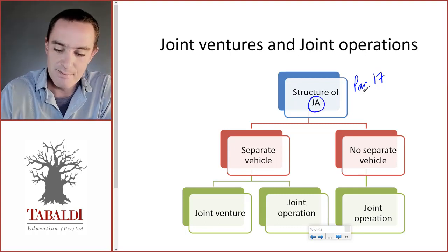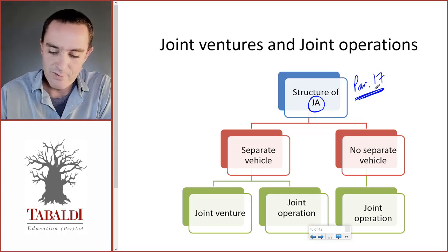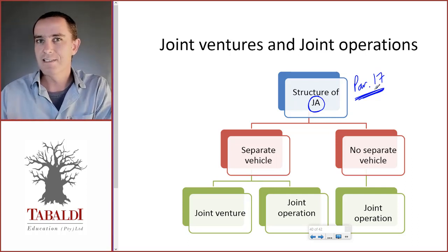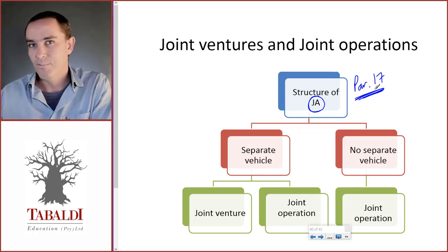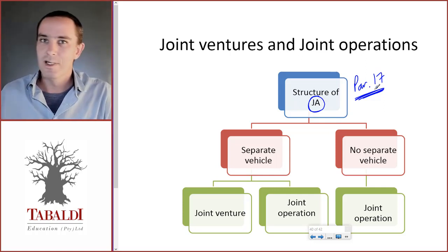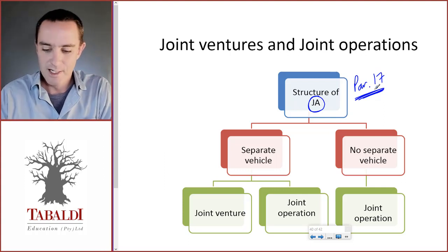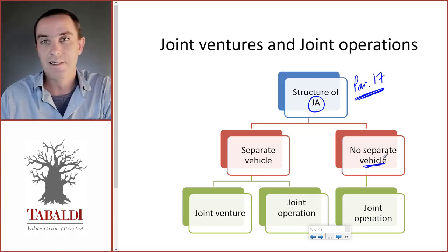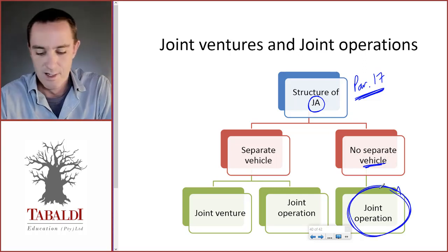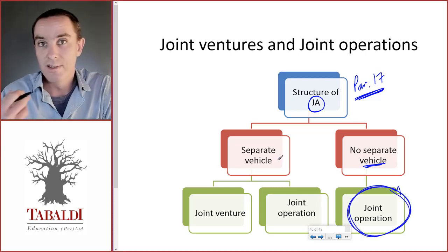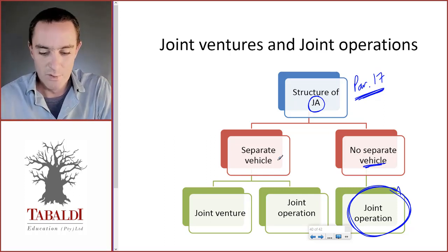If there is no separate vehicle — meaning the investors simply pool assets and liabilities together, with each investor contributing assets and jointly incurring liabilities, but no separate company is incorporated for this joint arrangement — then it is a joint operation. If there is a separate vehicle, such as a new PTY limited company incorporated specifically for the joint arrangement, then it will usually be classified as a joint venture.